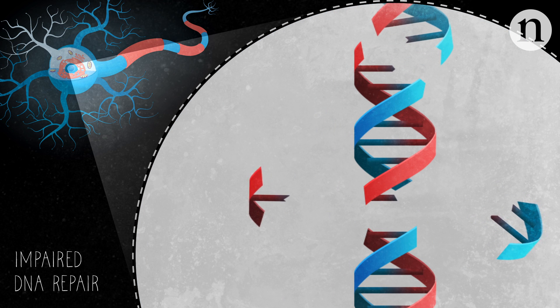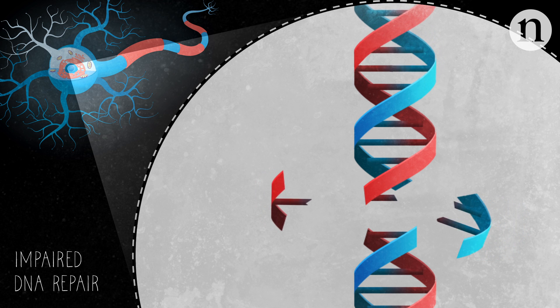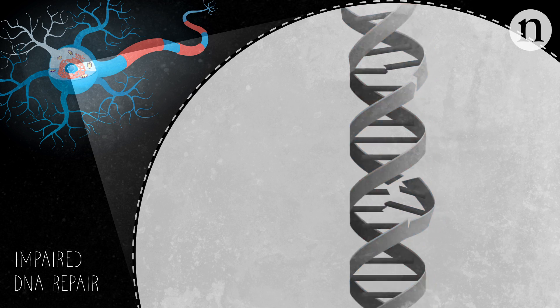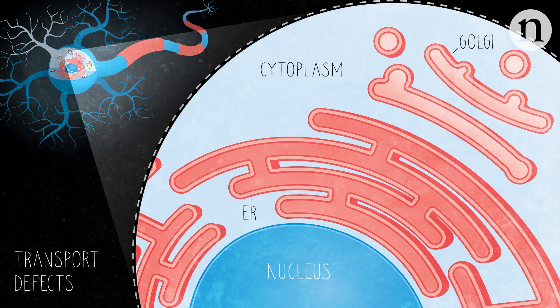ALS seems to affect DNA repair processes as well. When DNA breaks are poorly repaired, it ultimately contributes to the death of the neuron. The cell's transport machinery can also be damaged.